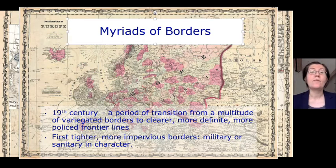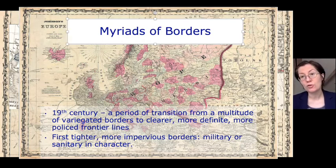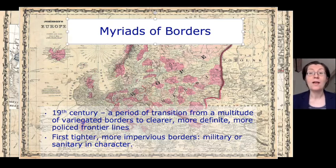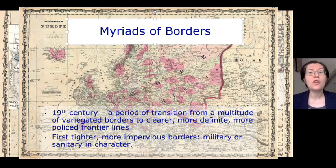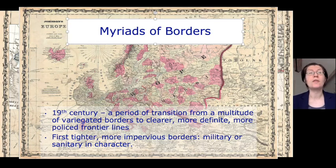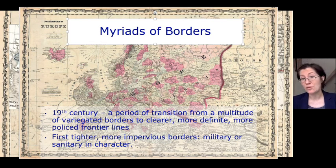For a long time, physical borders predominated: hedges and fencing running along fallow land, open fields, turf, wood, marshland, rivers and mountain ranges.